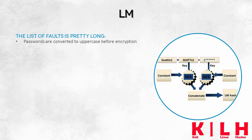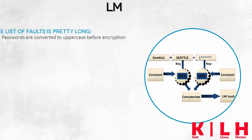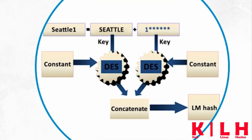Assume a user's password is the string Seattle1. The protocol converts the string into uppercase. In earlier versions of Windows, such as XP, user passwords aren't case sensitive. Uppercase and lowercase letters can be used interchangeably since the string will be converted anyway. The system doesn't recognize the case of letters used in the password.